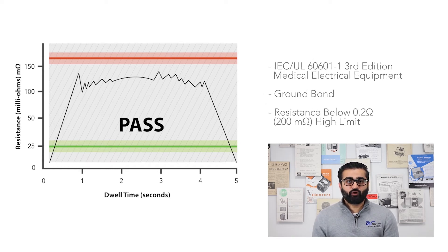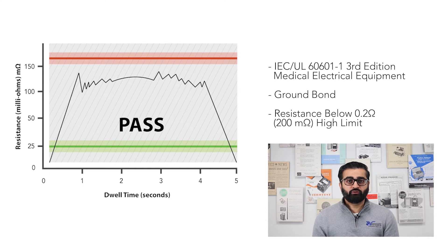Next, let's take a look at limits for ground bond tests. IEC 60601 requires that the resistance of ground circuit be below 200 milliohms. This gives us our high limit for ground bond tests. In order to pass the ground bond test, the resistance has to be under 200 milliohms.